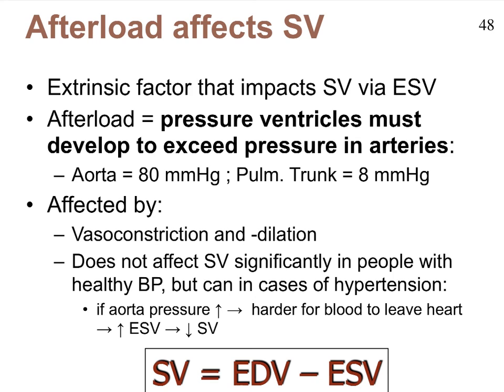This wraps up our discussion of the three factors that affect stroke volume by manipulating either EDV or ESV. Preload primarily impacts EDV and can, to some extent, also impact ESV. Contractility primarily impacts ESV, and afterload also impacts ESV. In our next and last video, we'll take a look at how heart rate can be manipulated. Once we've discussed that, we can come back to stroke volume and heart rate to look at some flow charts to understand how cardiac output can be changed in the body.